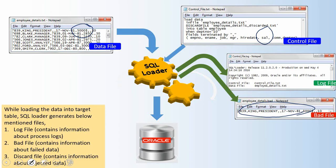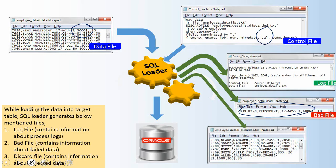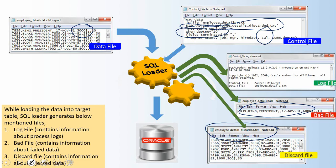There is one more optional file that gets generated called the discard file. When loading, we have an option to selectively read and load data by specifying a condition — for example, when department number equals 10, meaning only records satisfying that condition get loaded. Any record not satisfying the condition is moved to the discard file. You specify the discard file name using the keyword DISCARDFILE in the control file.